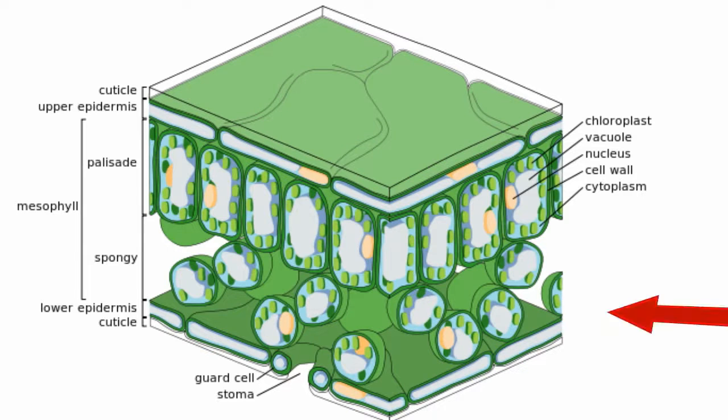Below those you have the lower leaf cells called the spongy mesophyll. There are many spaces between the lower leaf cells, and they temporarily store carbon dioxide and oxygen.